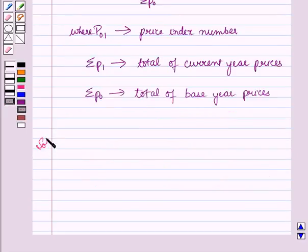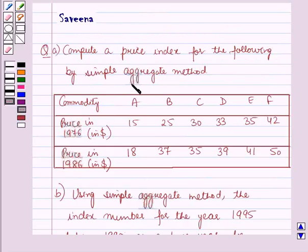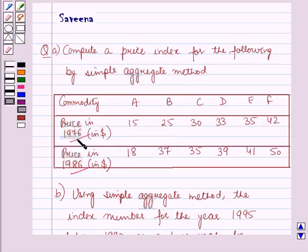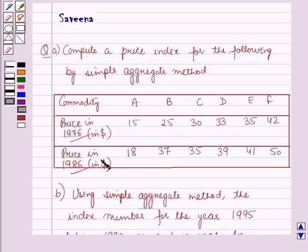Now we will start with the solution. First, let us start with Part A. We have to compute a price index for the following data by the simple aggregate method. Here, the year 1976 is the base year for the year 1986. The prices in 1976 will be the base year prices P0, and the prices in 1986 will be the current year prices P1.